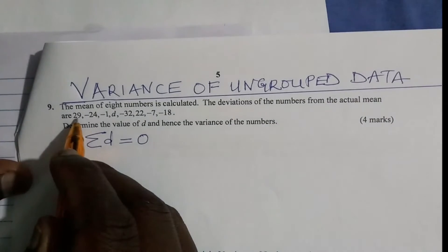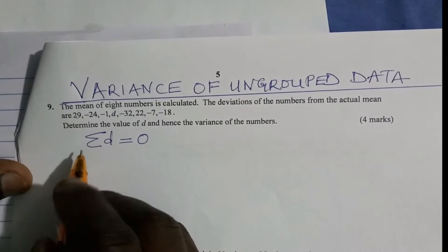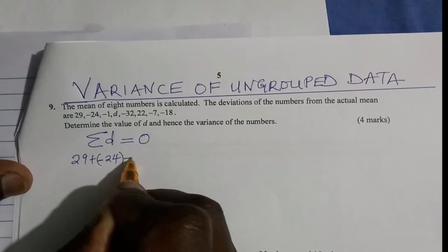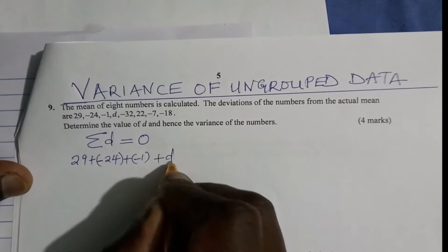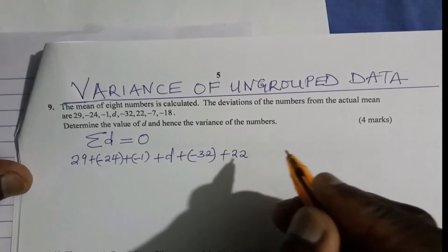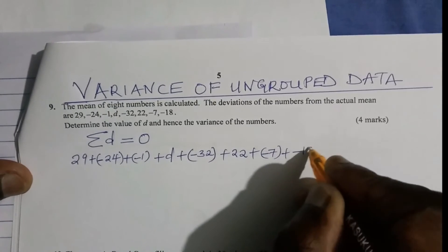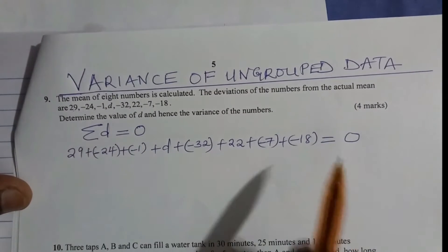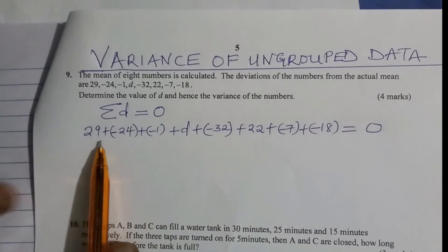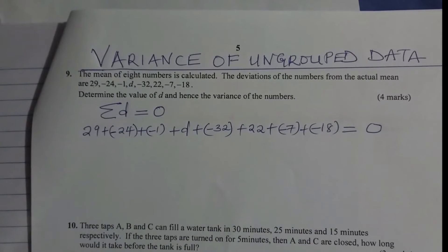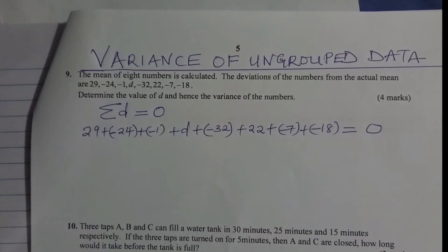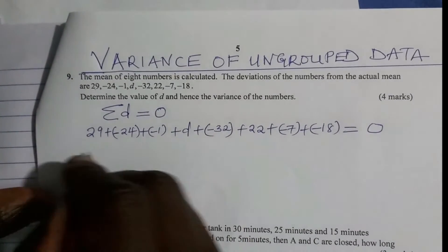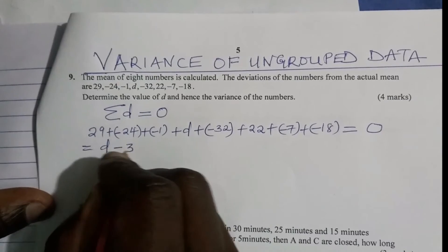So that means if I take the sum of the deviations, it will be given by adding everything here. So 29 plus negative 24 plus negative 1 plus D plus negative 32 plus 22 plus negative 7 plus negative 18 should give zero. Using a calculator: 29 plus negative 24 minus 1 minus 32 plus 22 minus 7 minus 18 gives negative 31 for the whole numbers. So you'll have D minus 31 equals zero.